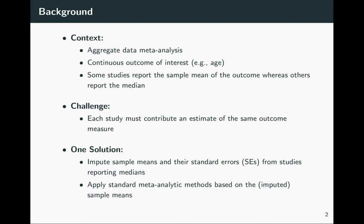We consider the setting of an aggregate data meta-analysis of a continuous outcome. In this setting it's fairly common that some of the primary studies report the sample mean of the outcome, but other primary studies may report the sample median. This is a challenge because standard meta-analytic methods require that each study contribute an estimate of the same outcome measure. There have been a number of solutions proposed in the statistical literature.